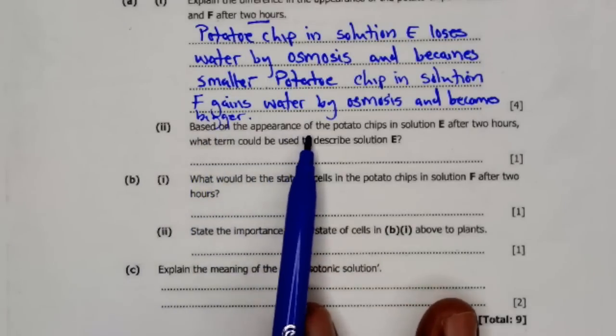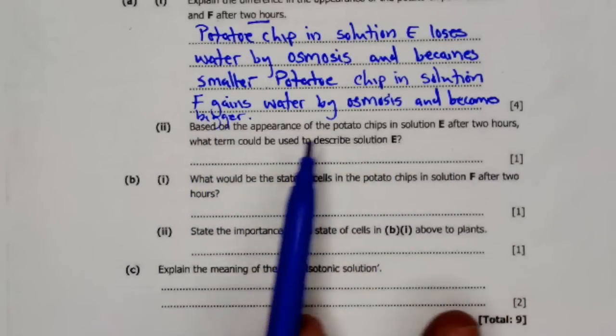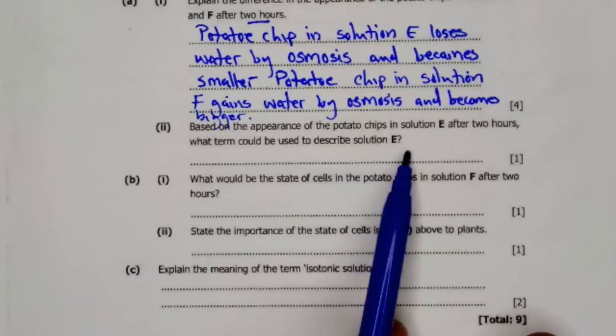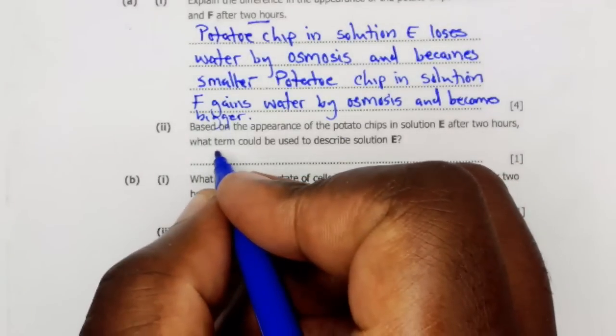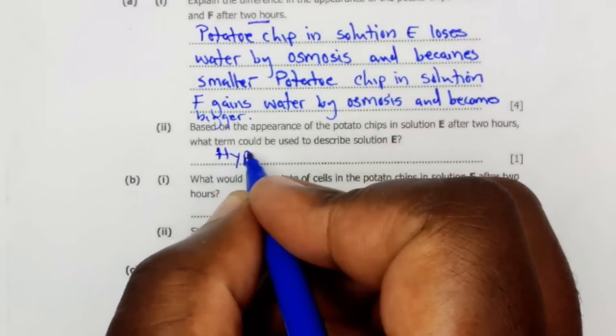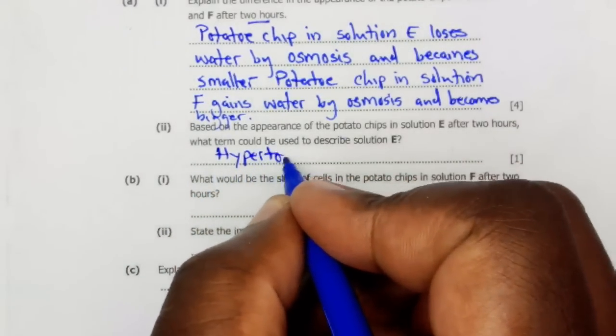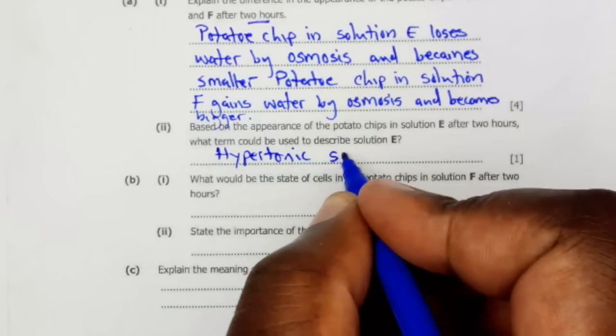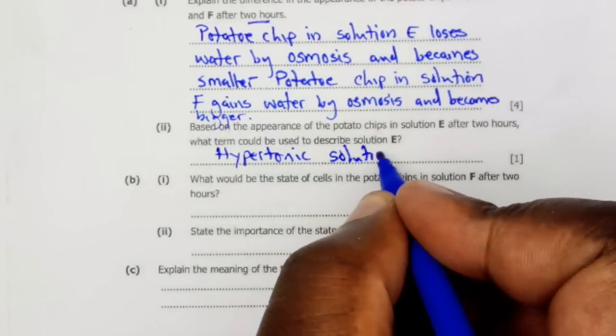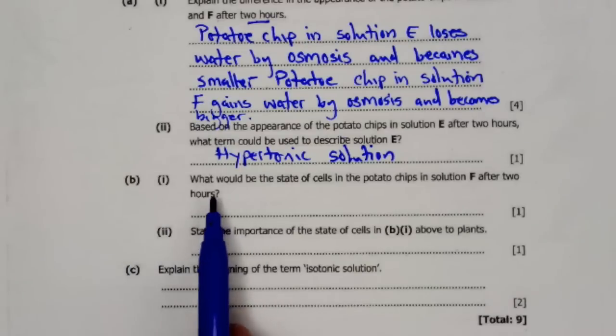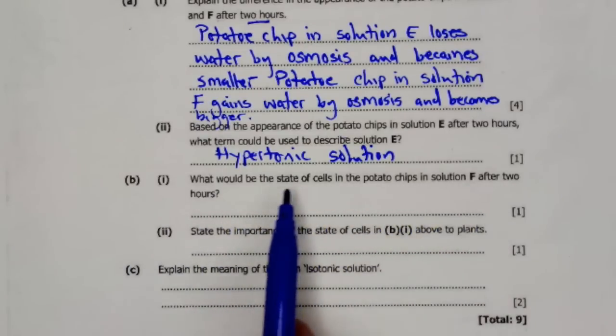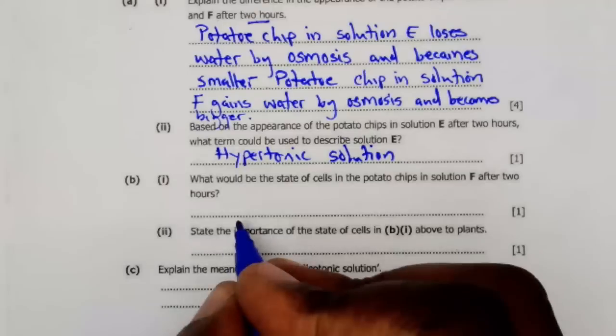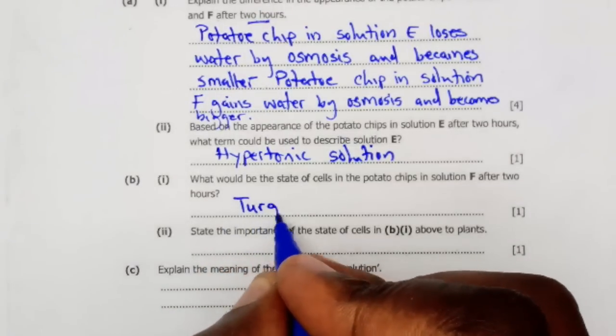A2: Based on the appearances of the potato chips in solution E after two hours, what term could be used to describe solution E? Solution E is a hypertonic solution. B1: What would be the state of cells in potato chips in solution F after two hours? The cells will be turgid.